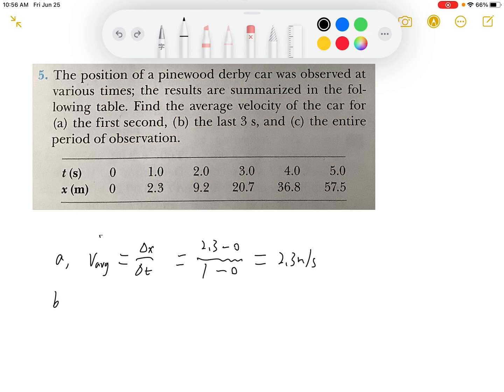For part B, we need to find the average velocity for the last 3 seconds, which is from 2 seconds to 5 seconds. So v_avg equals the final position